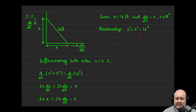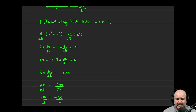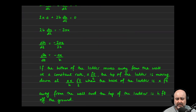Differentiating with respect to time, we get 2x(dx/dt) + 2h(dh/dt) equals zero, because the derivative of 16² is zero. We're told dx/dt equals a, so we have 2xa + 2h(dh/dt) = 0. Isolating dh/dt, the 2s cancel and we get dh/dt equals −ax/h.